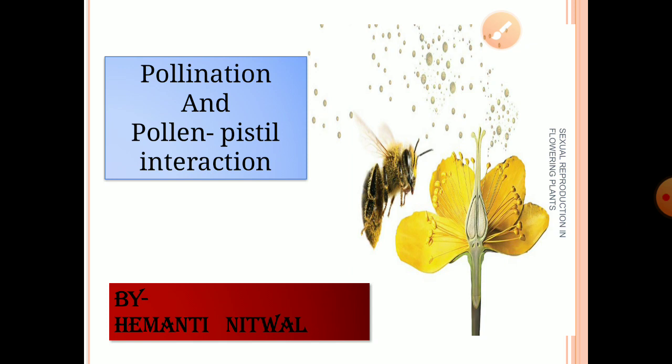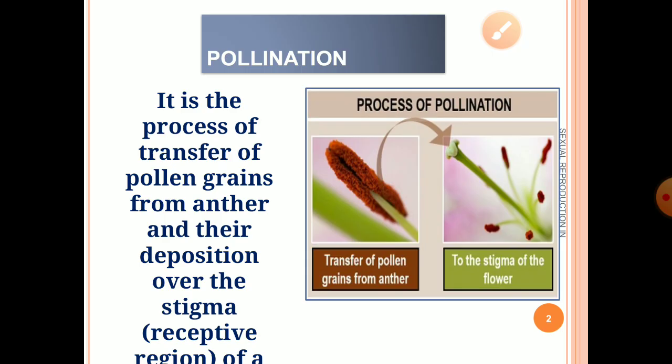After gametogenesis, another event follows — gamete transfer. In angiospermic plants, this process of gamete transfer is done by a mechanism known as pollination. It is a process of transfer of pollen grains from the anther to the stigma of a flower. In this picture you can clearly see pollen grains in the anther being transferred with the help of a pollinating agent onto the stigma.